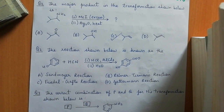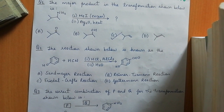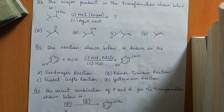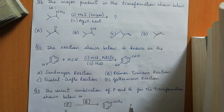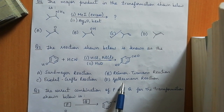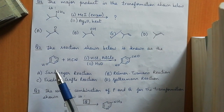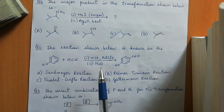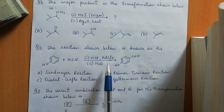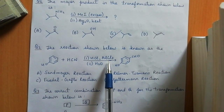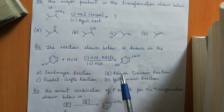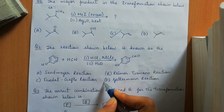Question two: the reaction shown below is known as — and you have to identify the name reaction. The options are Sandmeyer reaction, Reimer-Tiemann reaction, Friedel-Crafts reaction, and Gattermann reaction. This is the Gattermann formylation reaction, where aromatic compounds are formylated by a mixture of HCN and HCl in the presence of a Lewis acid such as AlCl₃.